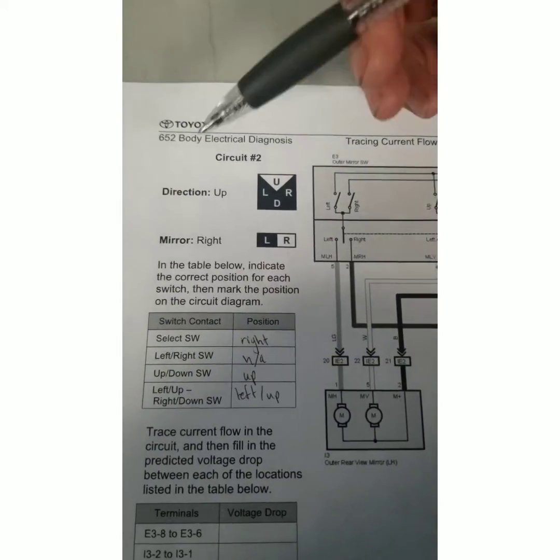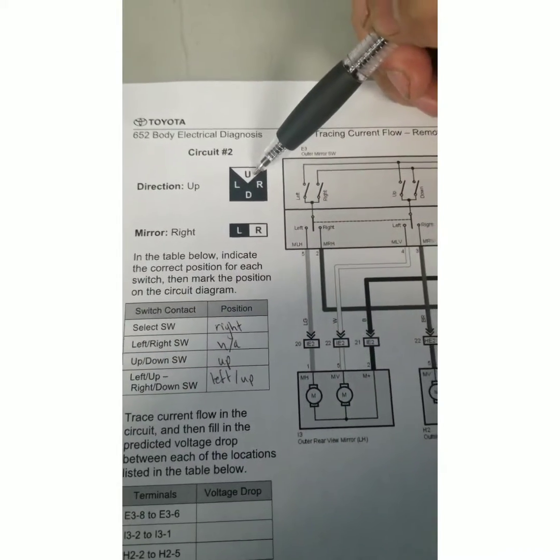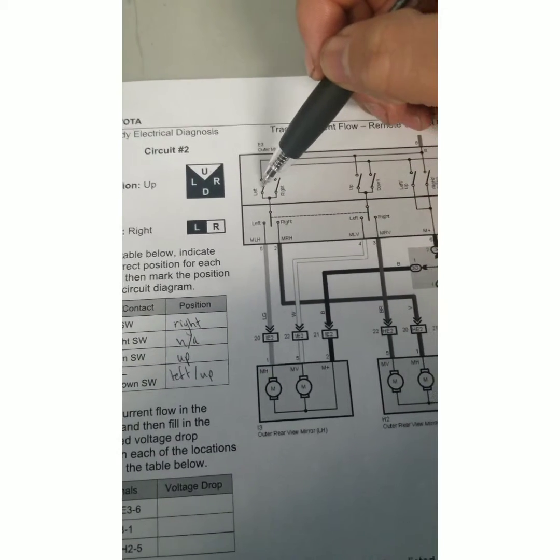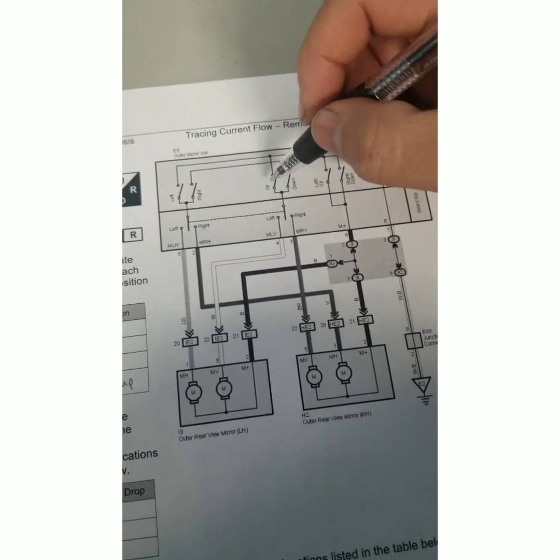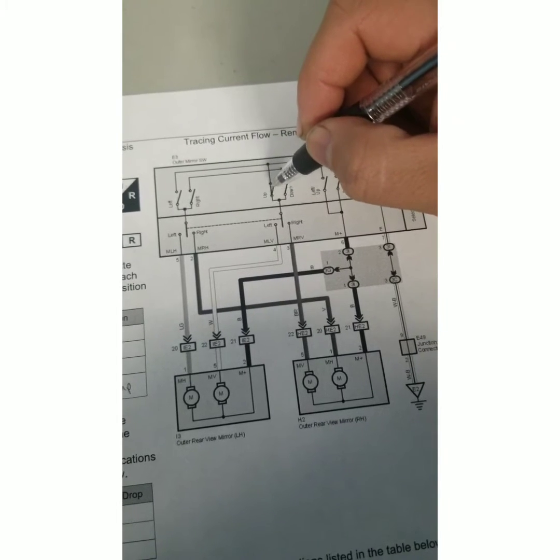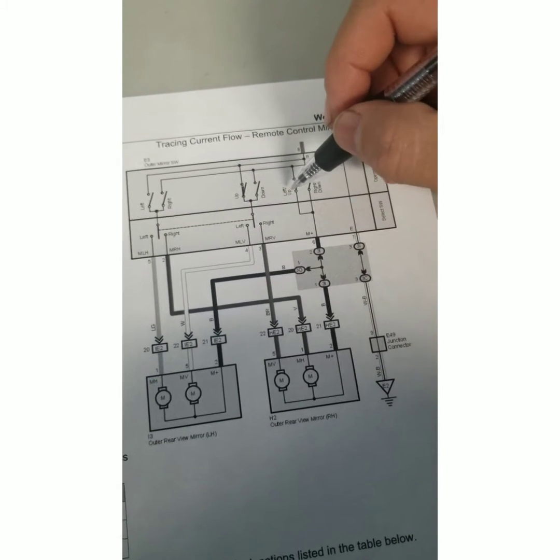For this particular circuit we're testing, the directional switch is in the up position. So we're going to move down and switch the up and the left up switch.